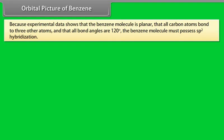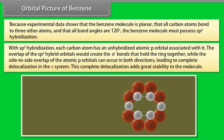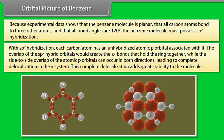Orbital picture of benzene. Because experimental data shows that the benzene molecule is planar, that all carbon atoms bond to three other atoms, and that all bond angles are 120 degrees, the benzene molecule must possess sp2 hybridization. With sp2 hybridization, each carbon atom has an unhybridized atomic p orbital associated with it. The overlap of sp2 hybrid orbitals creates the sigma bonds that hold the ring together, while the side-to-side overlap of the atomic p orbitals can occur in both directions, leading to complete delocalization in the pi system. This complete delocalization adds great stability to the molecule.